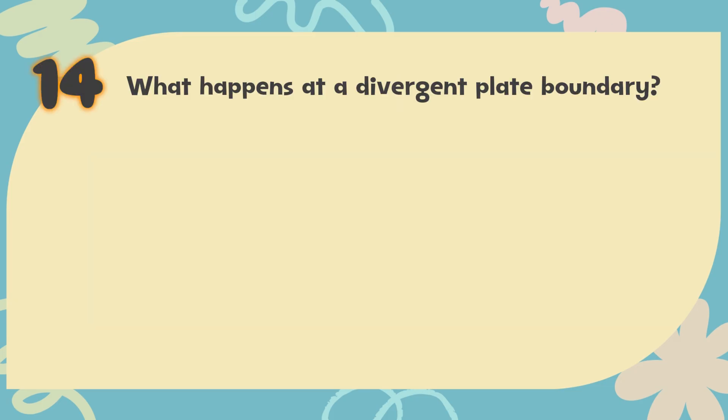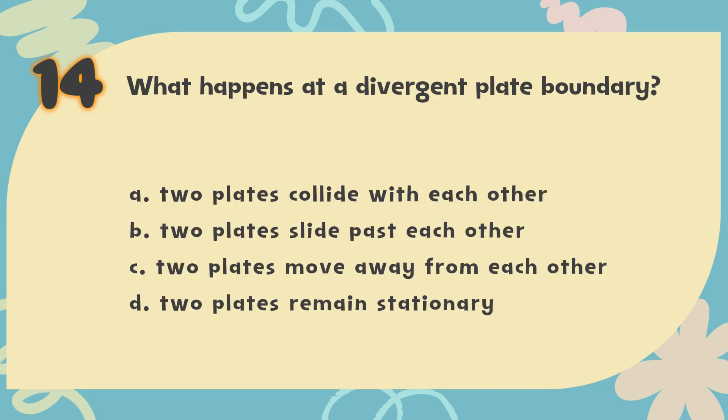Number 14. What happens at a divergent plate boundary? The choices are: A. Two plates collide with each other, B. Two plates slide past each other, C. Two plates move away from each other, D. Two plates remain stationary.